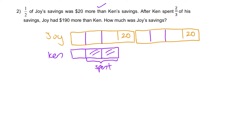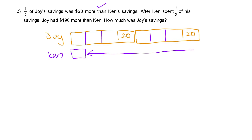If Ken spends two-thirds of his money, that two-thirds is gone. Joy would then have $190 more than Ken. So from here to here it's $190.